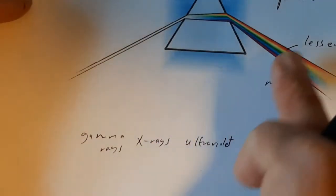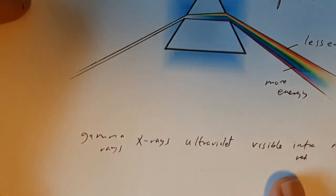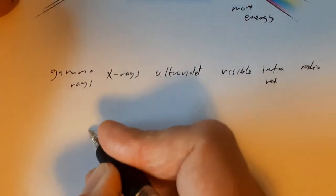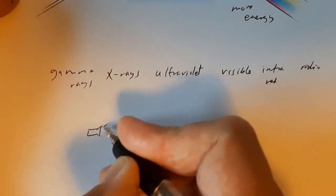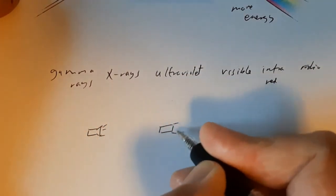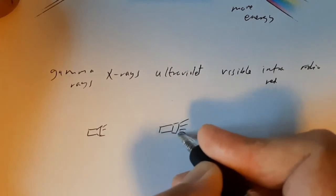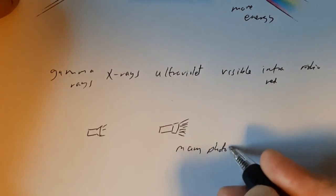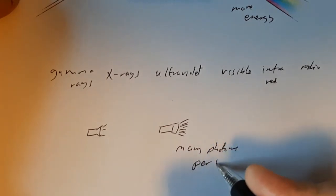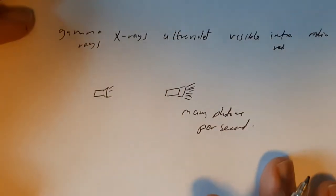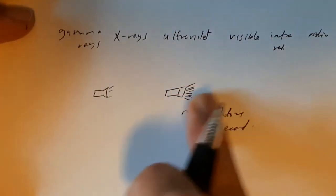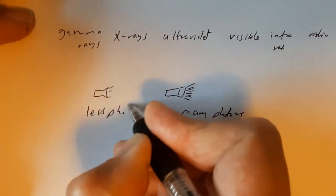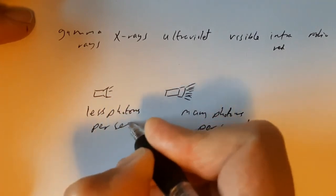We get our colour across the spectrum from the energy of the photons, and that takes a little bit of getting our head around. What's easier, going back to the last video, is thinking about our little feeble torch versus a really bright torch. In the photon model of light, the bright torch is simply emitting many more photons per second, while the feeble torch is emitting fewer photons per second.